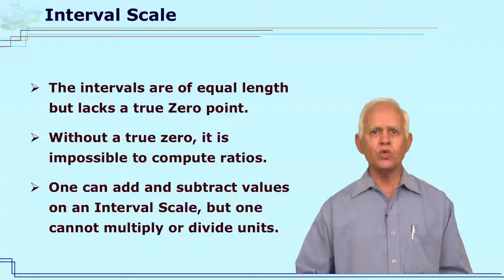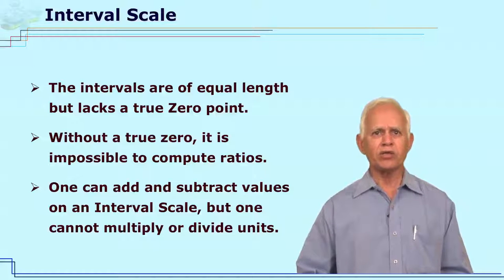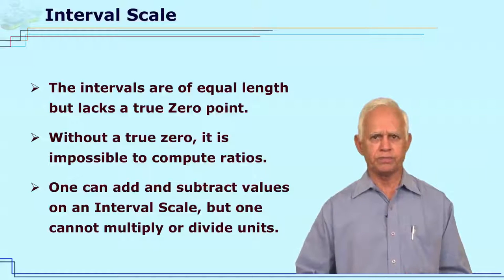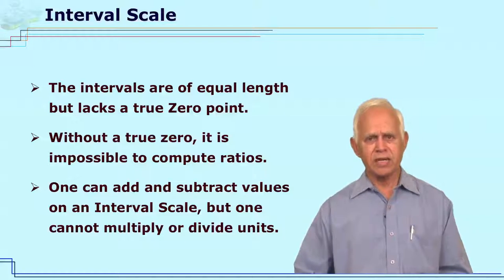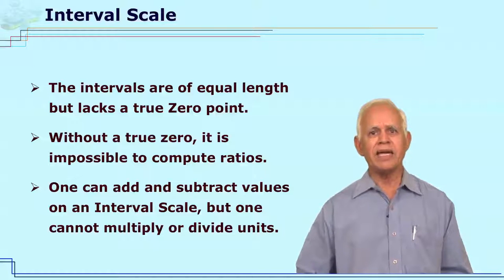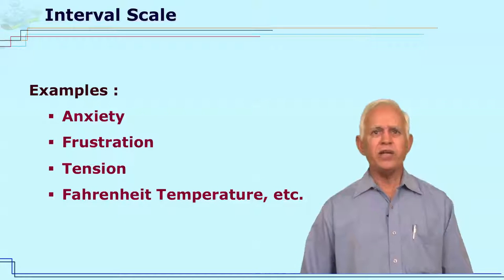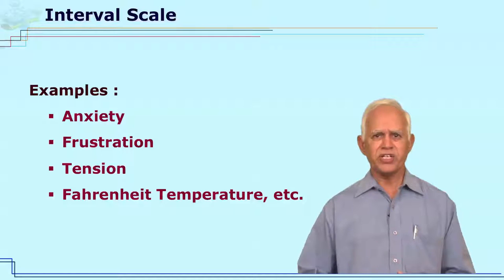Since there is no true zero, therefore, one cannot compute ratios. Now, when a researcher has data on the interval scale, he can add or subtract, but he cannot multiply and divide. The different variables whose measurement will be on interval scale are anxiety, frustration, tension, Fahrenheit temperature, etc.